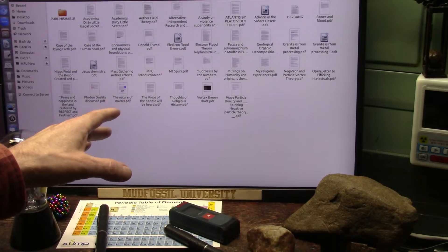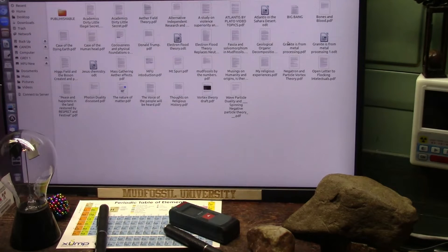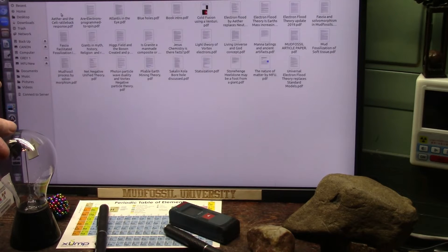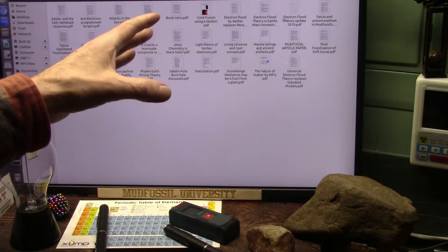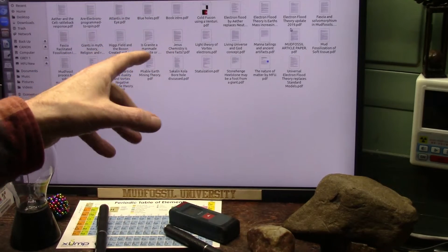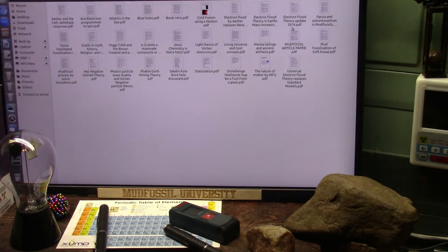All those are different papers, all kinds of different stuff. I just get crazy with this, I can't help myself. And these are publishable, these are ones like Cold Fusion using a Venturi electron flood theory. This is updated in 2019. And these are all publishable ones.